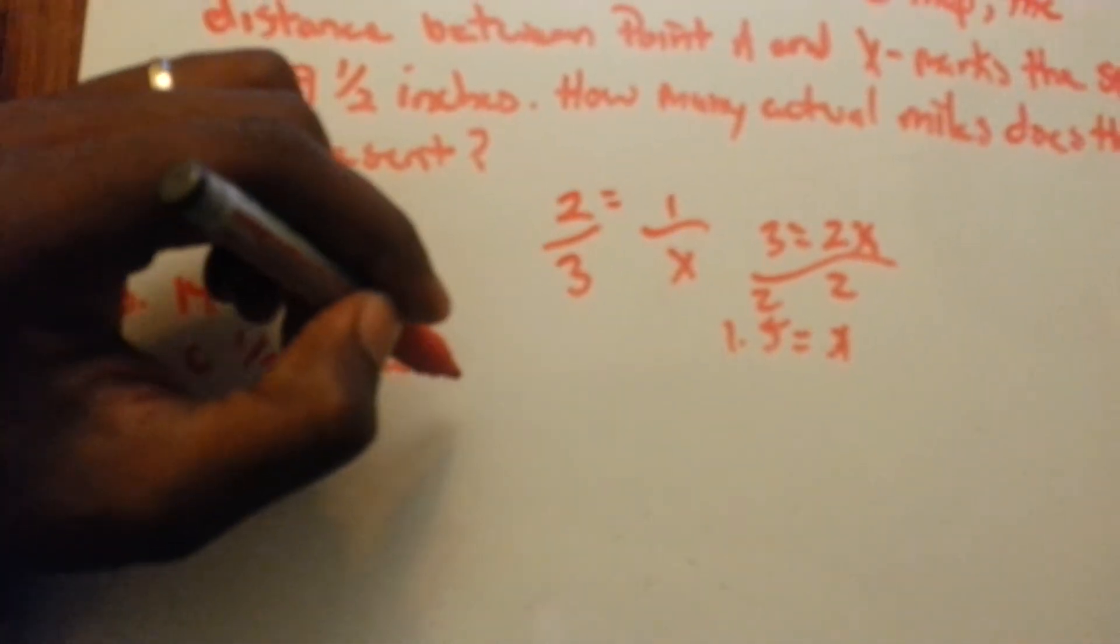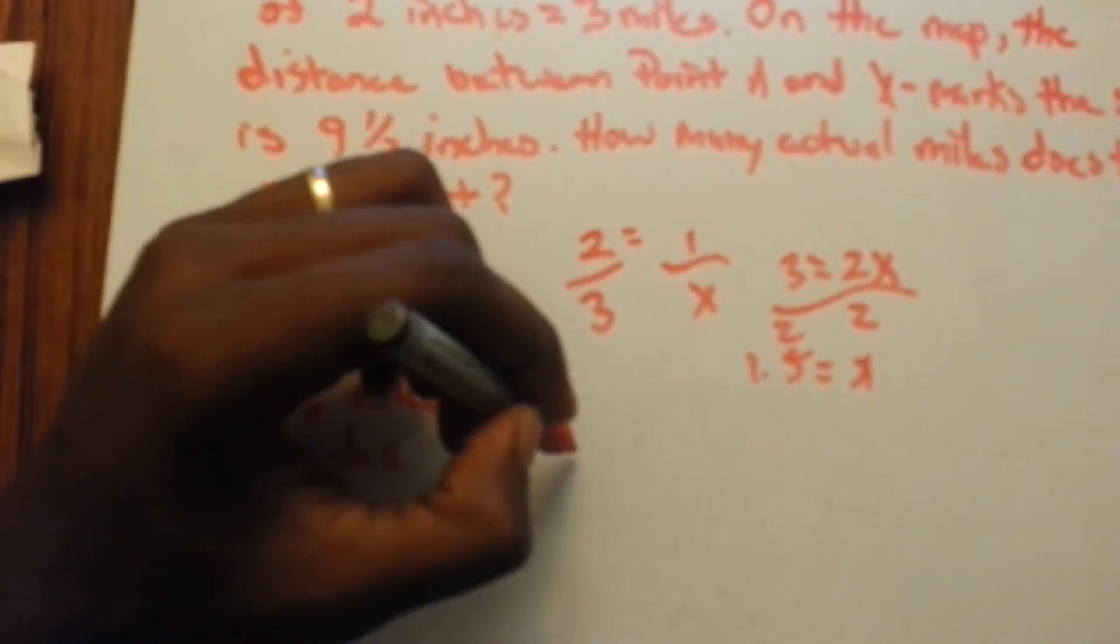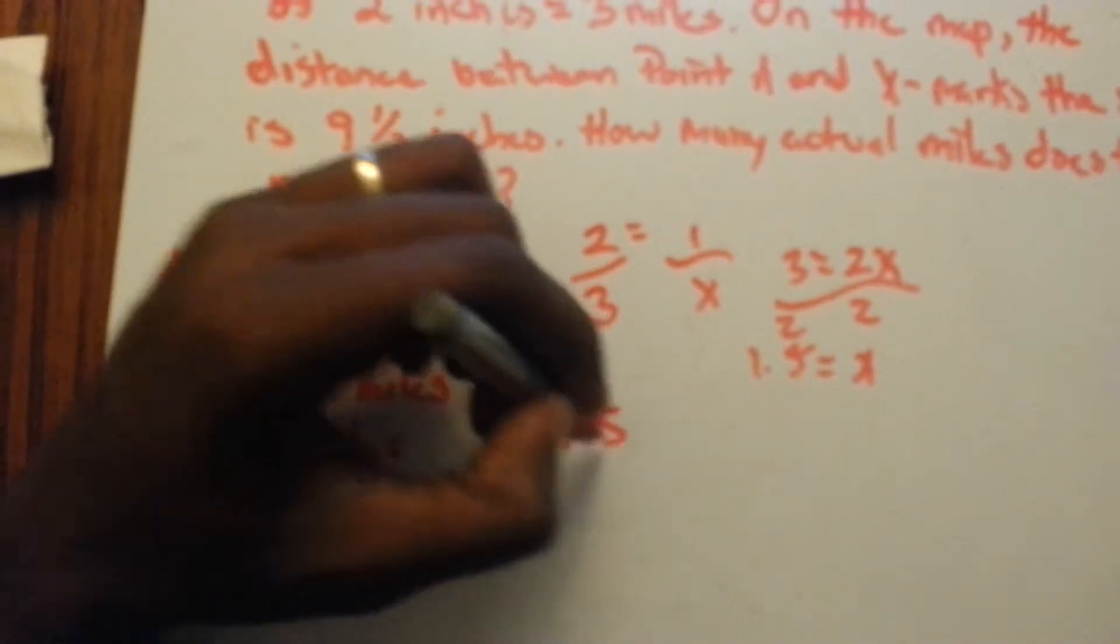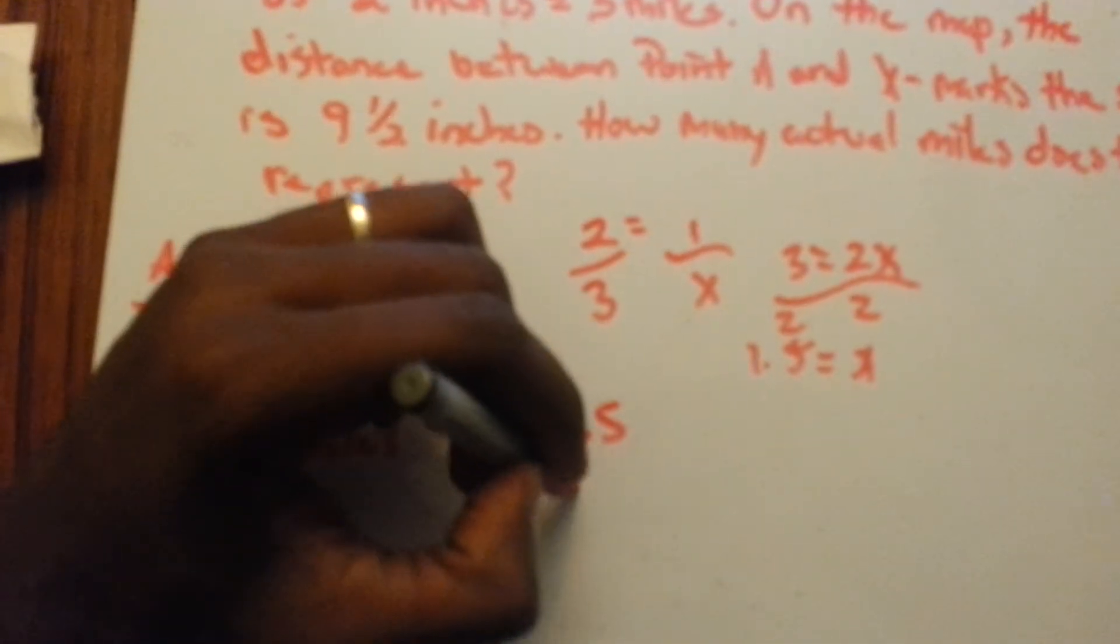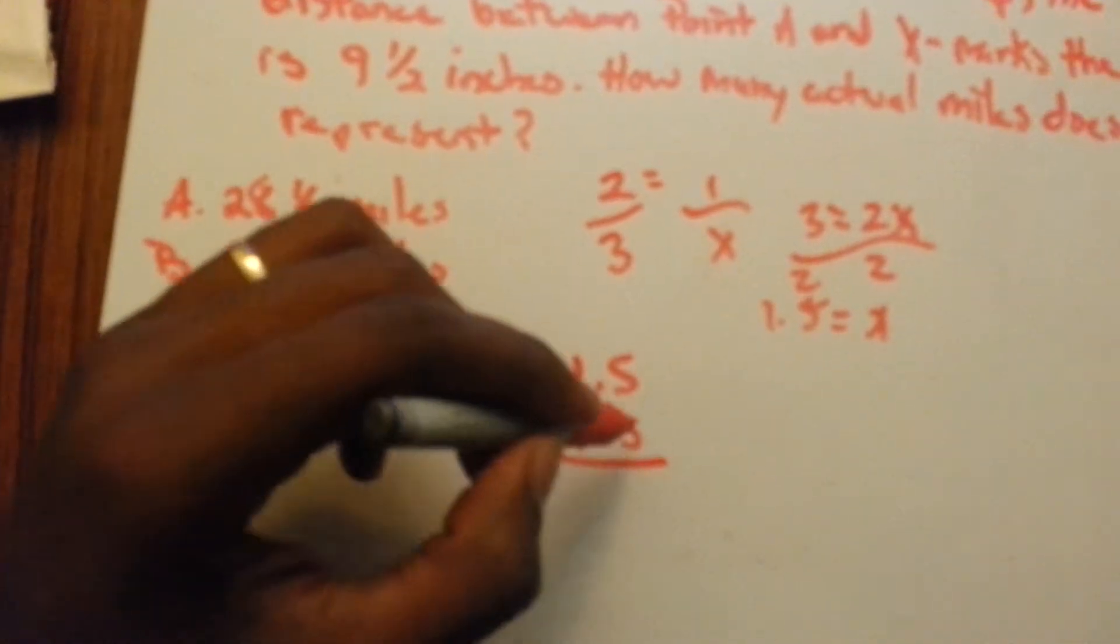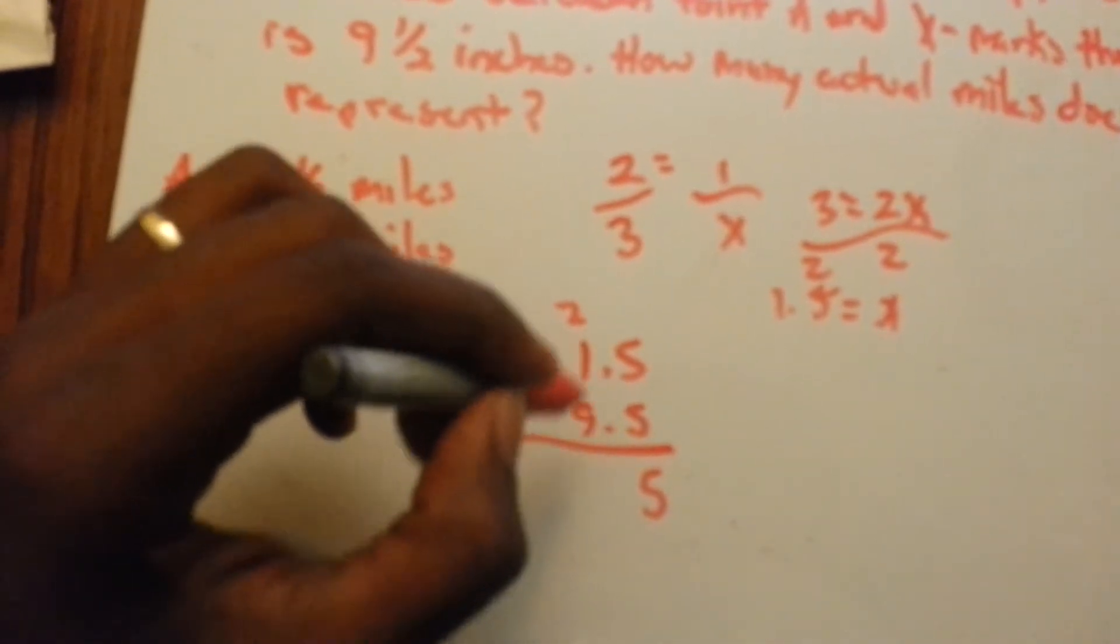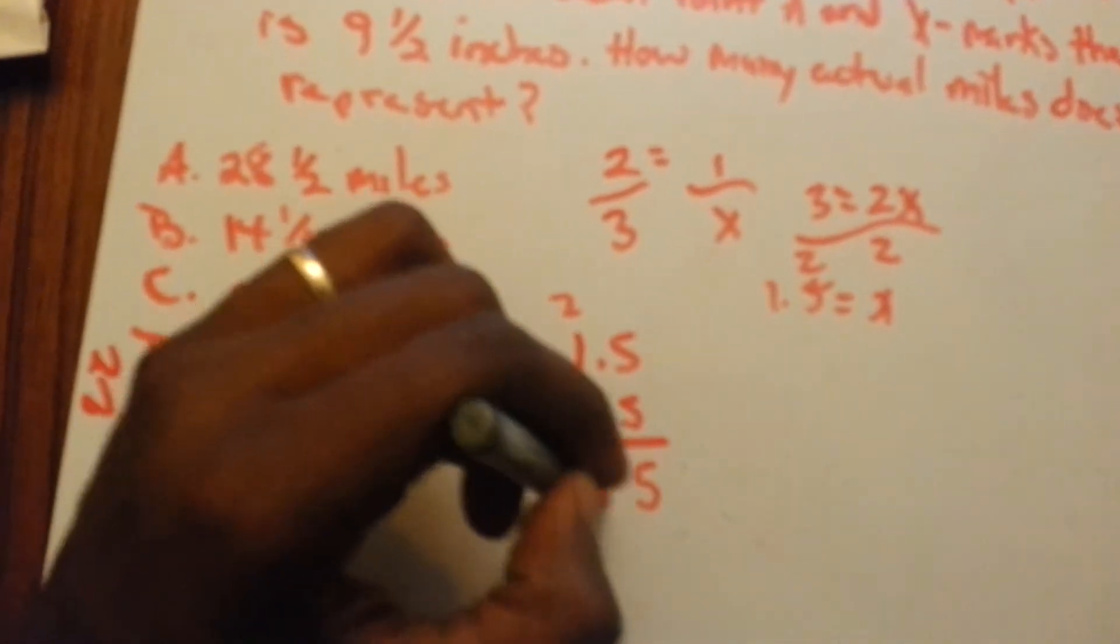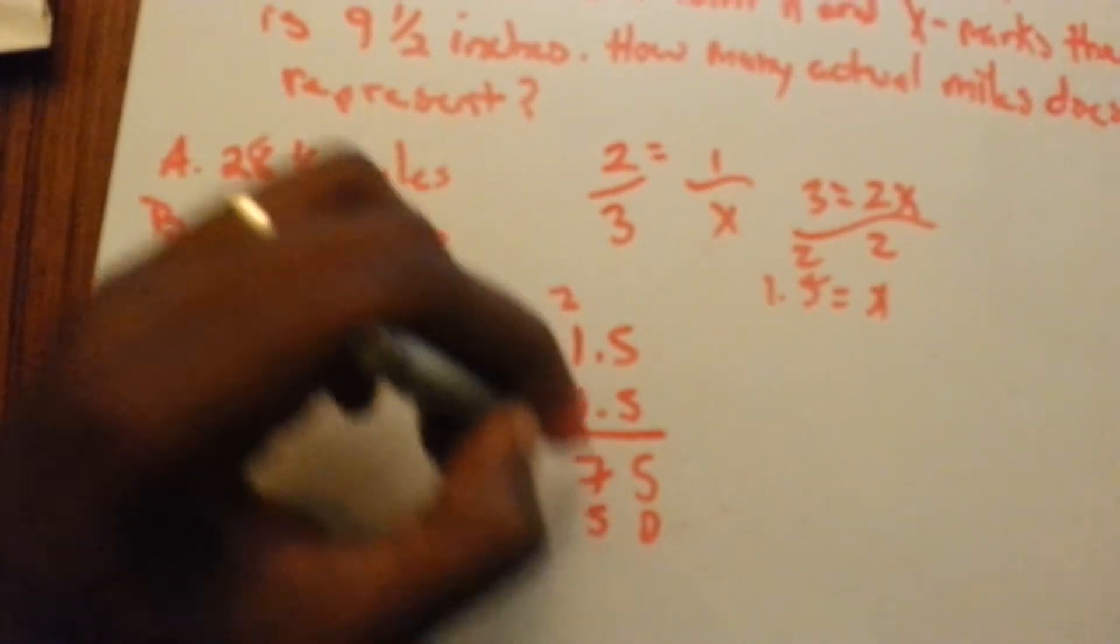So 1 inch equals 1.5 miles. So we have 9 inches, so 1.5 times 9.5 will give us our answer. 5 times 5 is 25, 5 times 1 is 5, plus 2, 7, bring down a 0, 9 times 5 is 45,